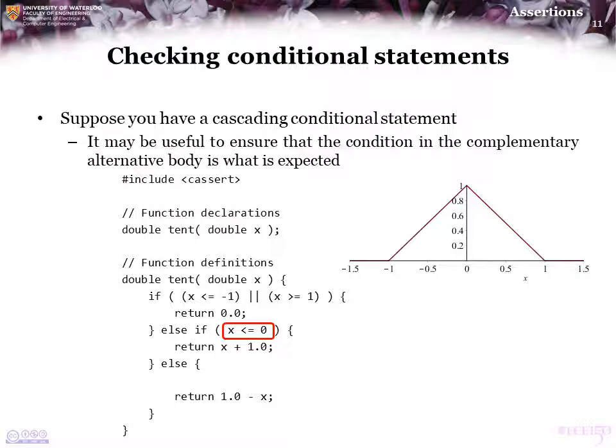In this case, we return the value of the function on the increasing slope. So, we return x plus 1. If both of these conditions are false, then x must be greater than 0 but less than 1. In which case, we return the value 1 minus x, which gives us the decreasing slope from 1 back down to 0.